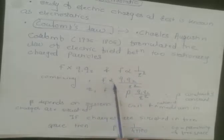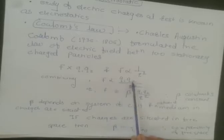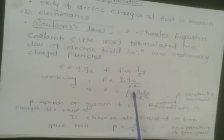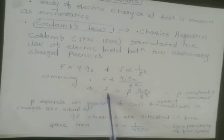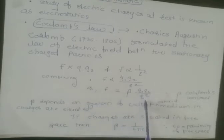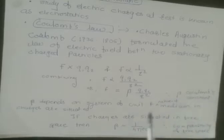Combining these two statements, we have: the force is directly proportional to the magnitude of the charges q1 times q2 divided by the square of the distance r² between them. We can write this law as F = β·q1·q2 / r², where β is Coulomb's constant. This β depends on the units and the nature of the medium in which the charges are situated.